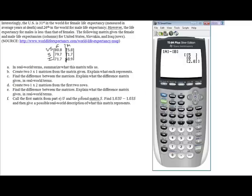Now the next thing we want to do is create two 1 by 2 matrices from the first two rows. I'm going to use C and D. So I'm going to create a 1 by 2, I'll have 80.8 and I will have 75.8. And then I'm going to do the same thing but for the second row and I'll create this in matrix D. This will be again a 1 by 2, I'll have 79.7 and I'll have 71.7.